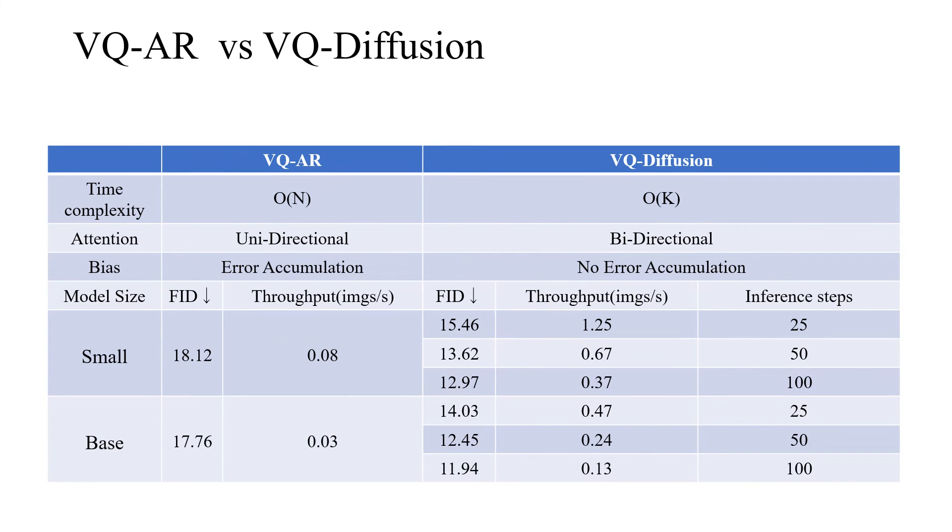For a fair comparison, we replace our diffusion image decoder with an autoregressive decoder with the same network structure and keep other settings the same. The time complexity of VQAR model is O(N), while VQ diffusion is O(K). Besides, the VQ diffusion avoids the trouble of unidirectional bias and error accumulation issues. The VQ diffusion with fast inference strategy is 15 times faster than VQAR model with a better FID score.